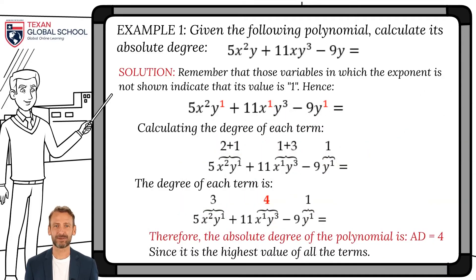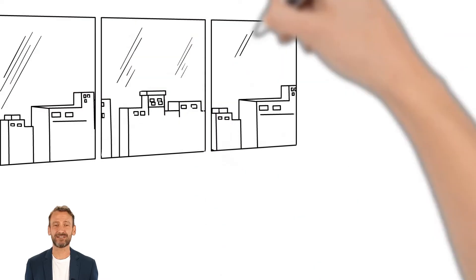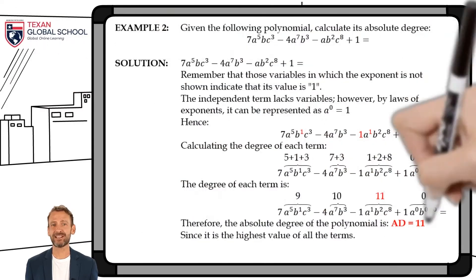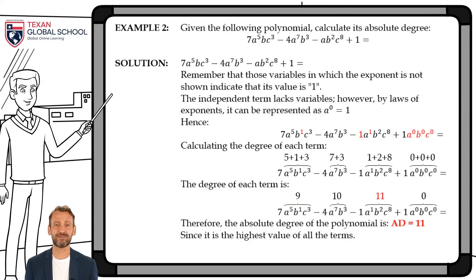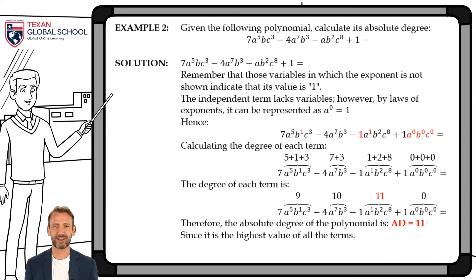In this second example, we will also highlight those exponents of degree 1. Remember that the independent term does not affect the absolute degree since it lacks variables. However, by laws of exponents where a raised to 0 is equal to 1, we can represent all variables of the independent term with this law. This confirms that the independent term does not affect the absolute degree of the polynomial. Once the polynomial is arranged, we add the exponents of each term. We can see that the maximum value is 11.